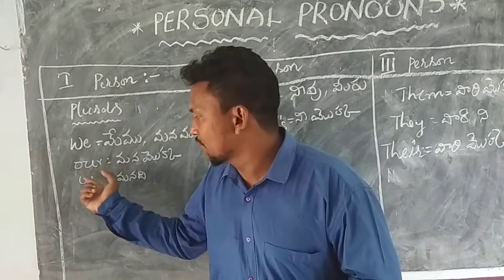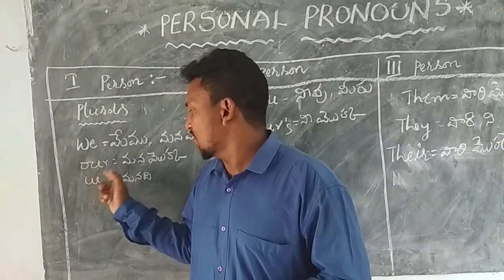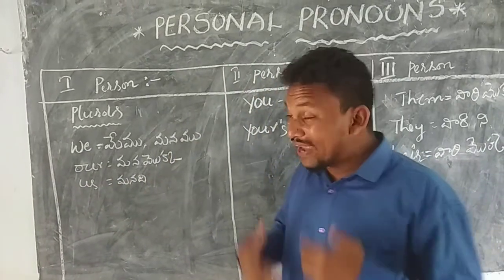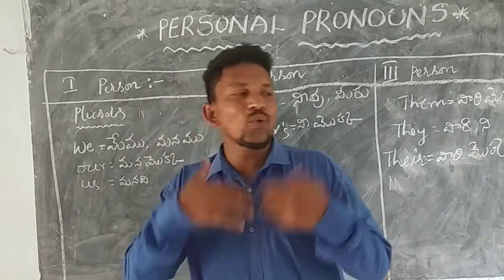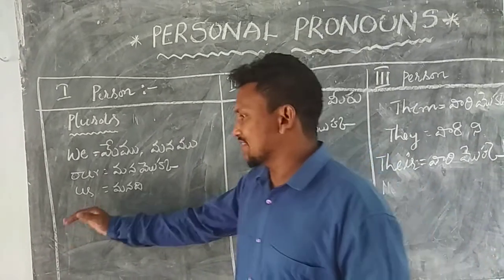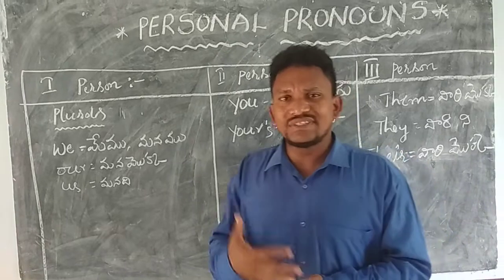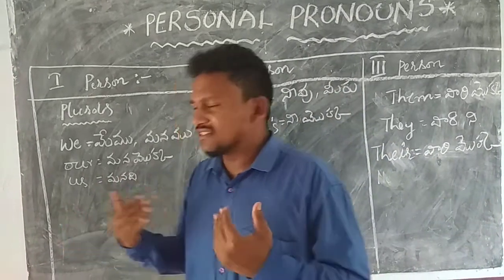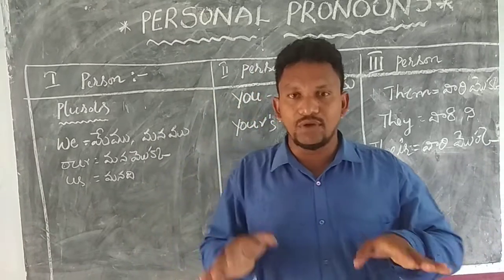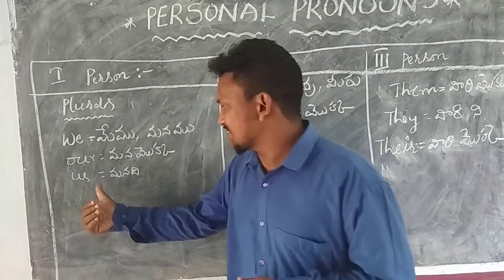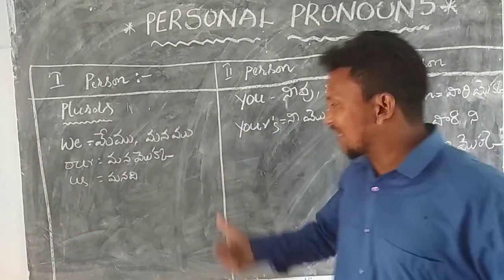We also use 'our' when talking about plurals. And then there is 'us' — 'us' is a little different to understand. For example, when someone is asking or referring to a group, we use 'us.' It belongs to us — we can say 'it is us.' Now let us move to the second person.